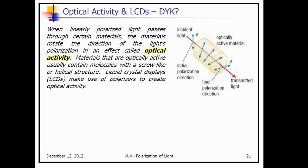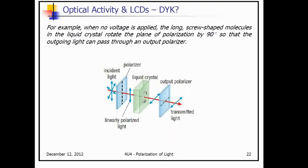When linearly polarized light passes through certain materials, the materials rotate the direction of the light's polarization in an effect called optical activity. Materials that are optically active usually contain molecules with a screw-like or helical structure. Liquid crystal displays make use of polarizers to create optical activity — a polarizer rotates around an axis and transforms the light, releasing the type of light that is desired, basically acting as your RGB color control. As it rotates, it leaves out different types of colors so that only the desired color is output.